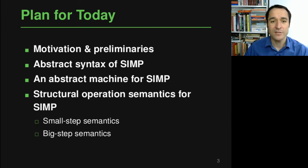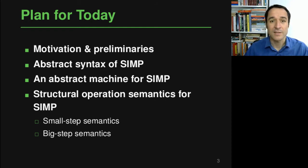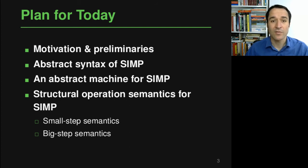Here's a rough plan for the lecture. We'll start with a motivation — why do we actually need operational semantics — then give some preliminaries, basically formal concepts we'll need. Then we'll describe the syntax of the language used in this lecture, called SIMP, a simple imperative programming language. After that, we look at three different ways to describe the behavior of a program: an abstract machine, and two forms of structural operational semantics — small step and big step semantics.